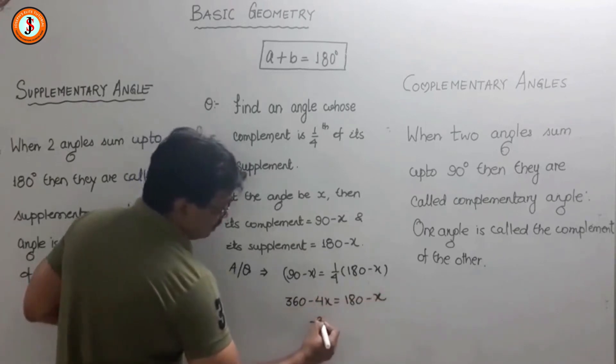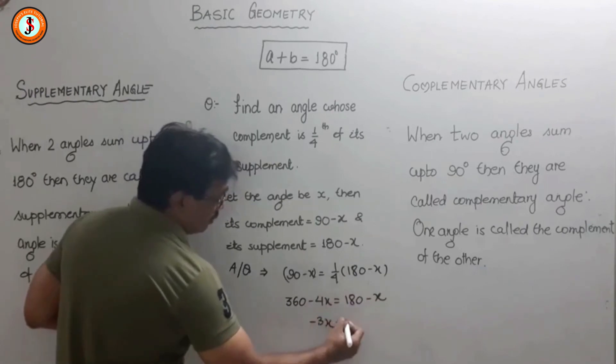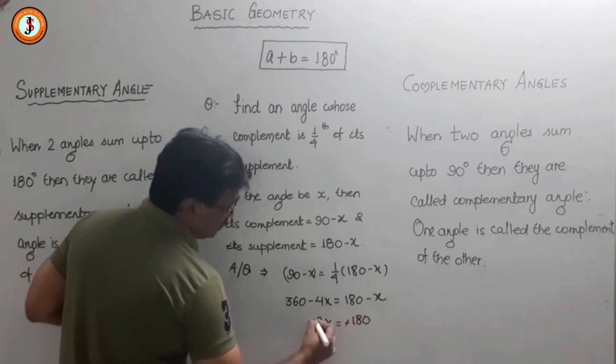Moving terms to one side gives minus 3x, since minus 4x plus x is minus 3x. And 180 minus 360 equals minus 180. The negatives cancel, so x equals 60 degrees.